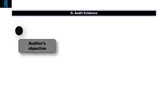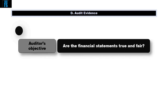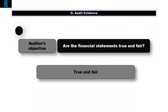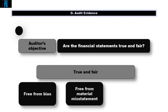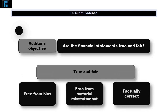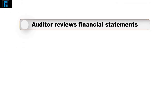The overall objective of the external auditor is to decide whether the financial statements are true and fair and properly prepared. True and fair can be described as free from bias, free from material misstatement, and factually correct. The auditor should also ensure the accounts have been prepared using an appropriate reporting framework. We look at this when reviewing the financial statements as a whole.